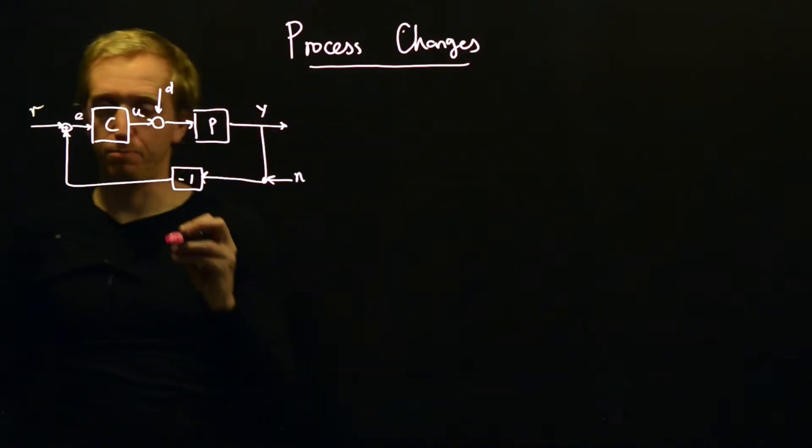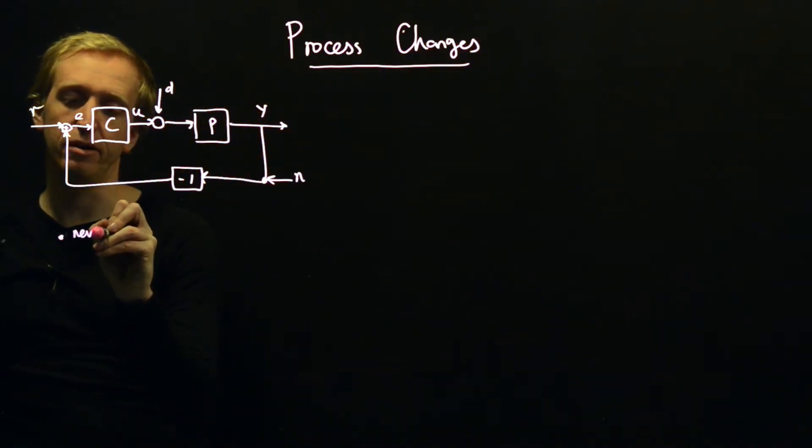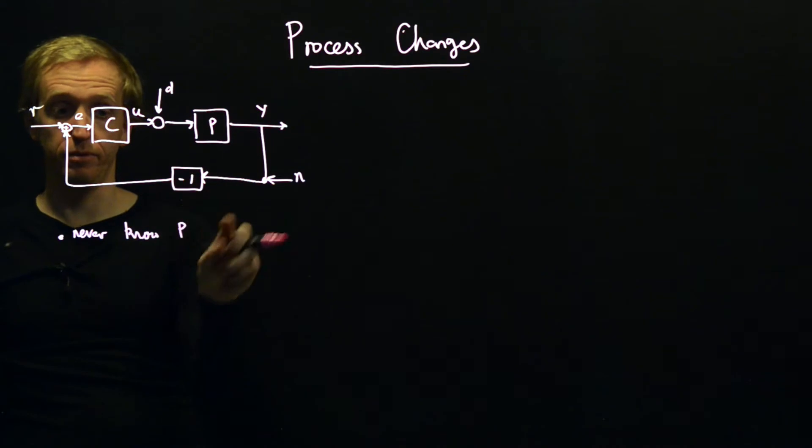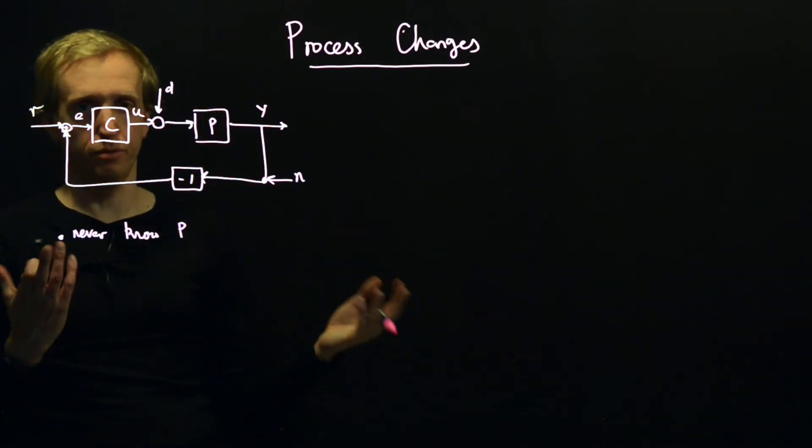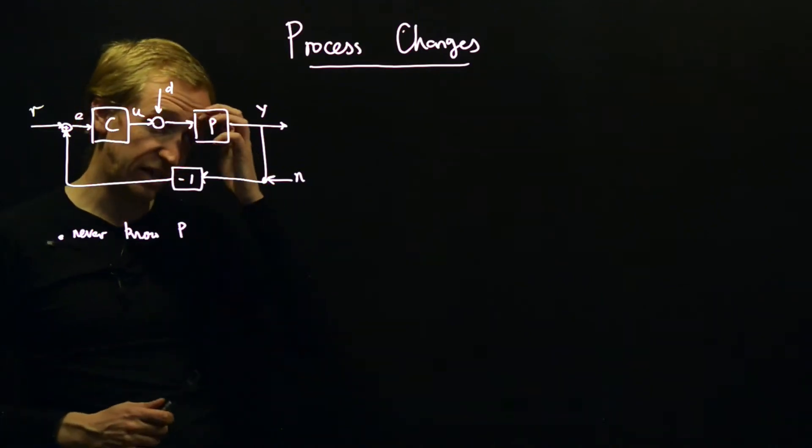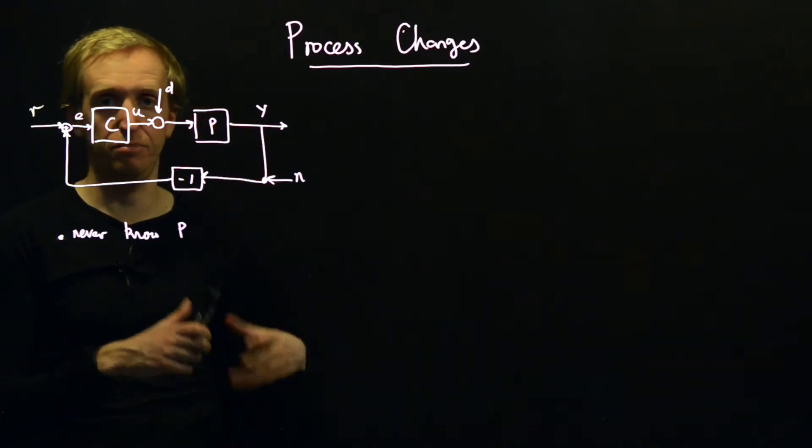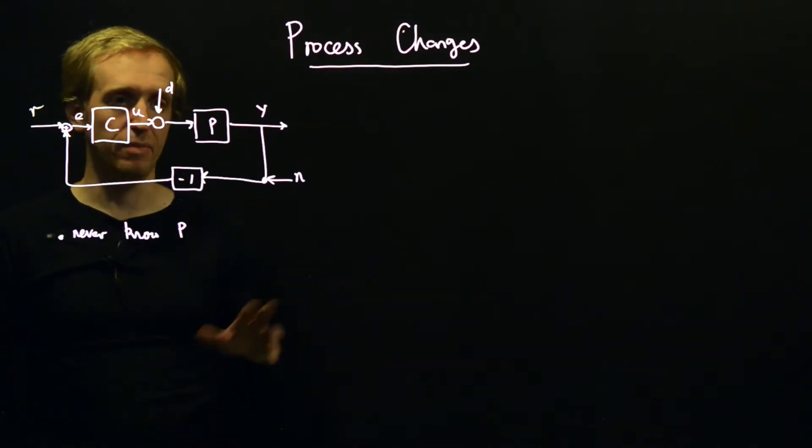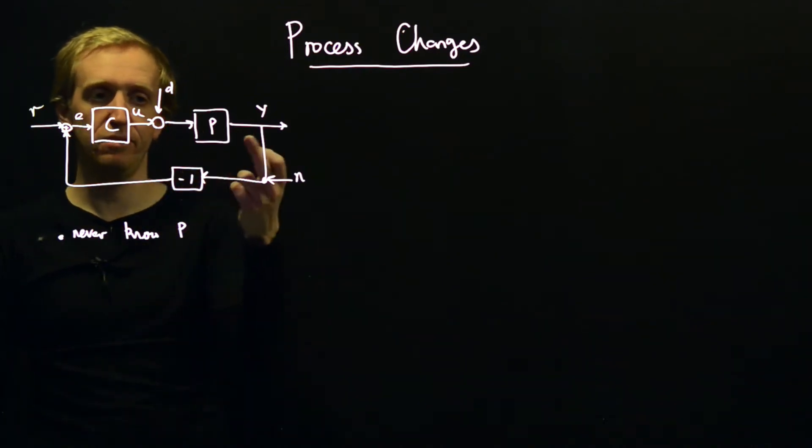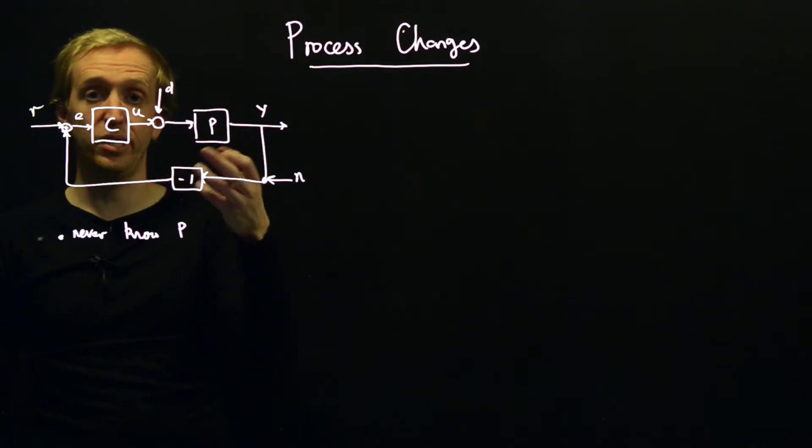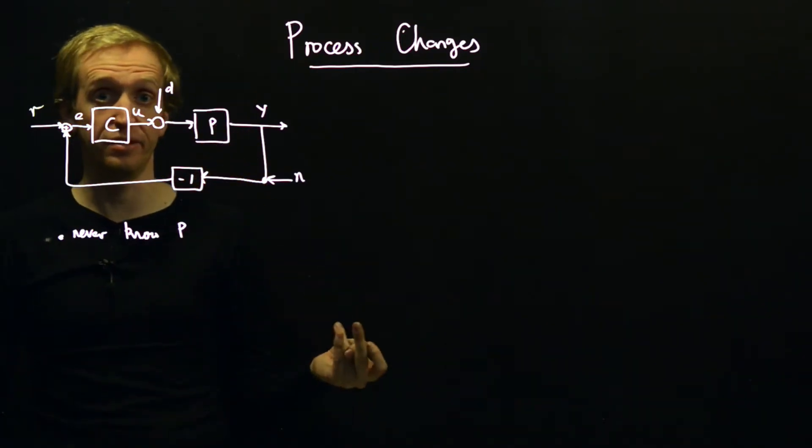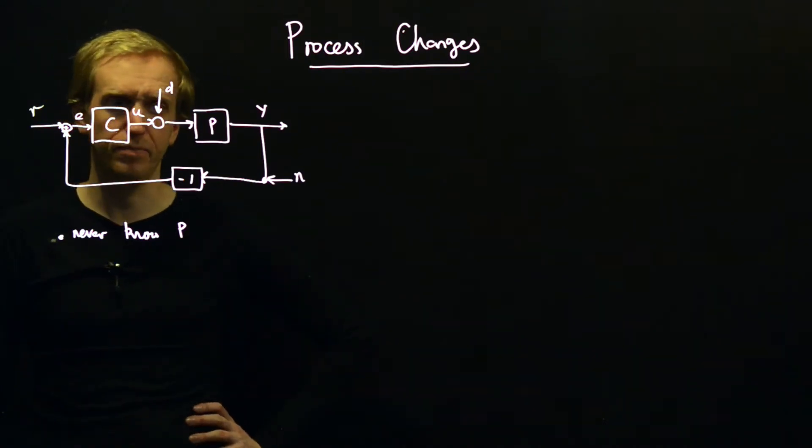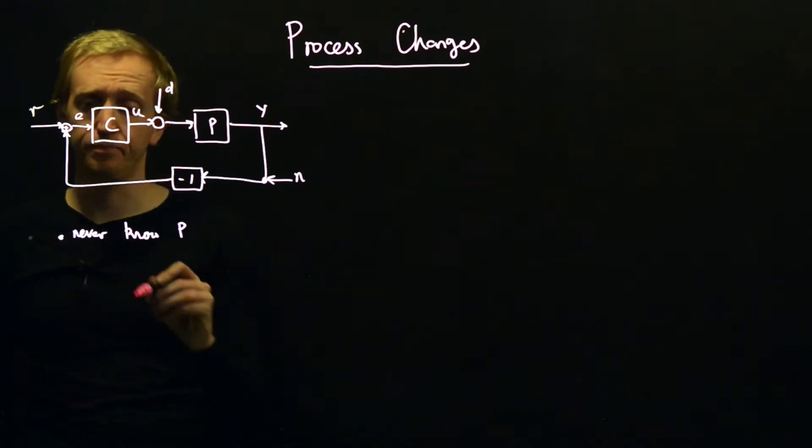So the key point here is you never know the process. You have some model which you may have differing degrees of faith in, or you may have faith in it to predict behavior on short timescales, but not so good on long, or vice versa. How can we make our design, or do our design in such a way to take account for this uncertainty and try to get things to behave predictably despite this uncertainty?